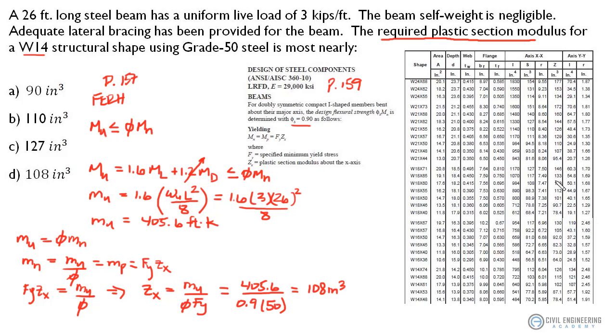It's a table that lists some plastic modulus values for some typical structural shapes. Now we've just determined that our required plastic section modulus is 108, which incidentally, we have the answer now, it's answer D. But if we were to go on a little bit further and try to select the actual structural shape that would work for this beam, we would go down the chart.